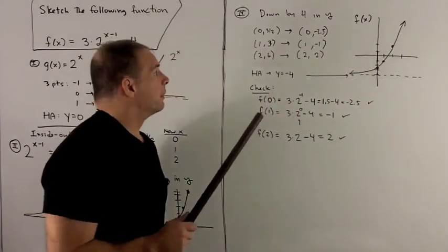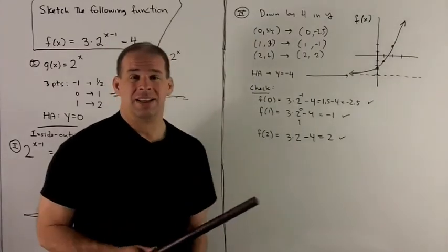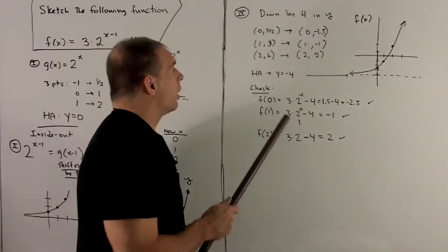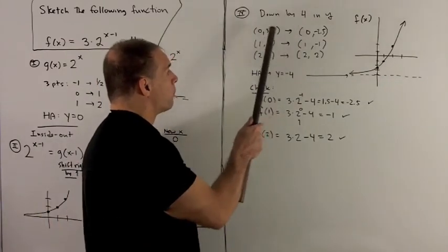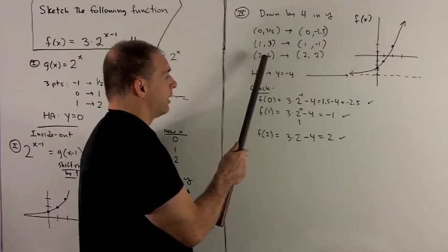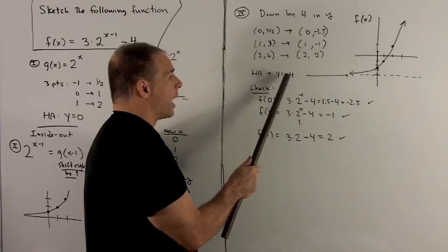For our final step, we're just going to subtract 4 off the function. Since that's in the outside, it's going to affect y values also. So now I'm just going to pull a 4 off of the last set of points that I graphed. And I also note, this will change the horizontal asymptote.